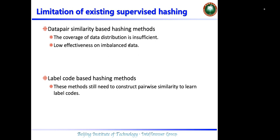The second problem is low effectiveness on imbalanced data. In real-world datasets, the number of dissimilar data pairs is much larger than the number of similar data pairs. Hence, such hashing methods cannot generate good hash codes with the label information preserved sufficiently.